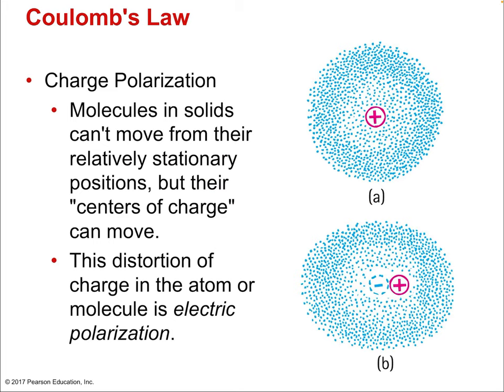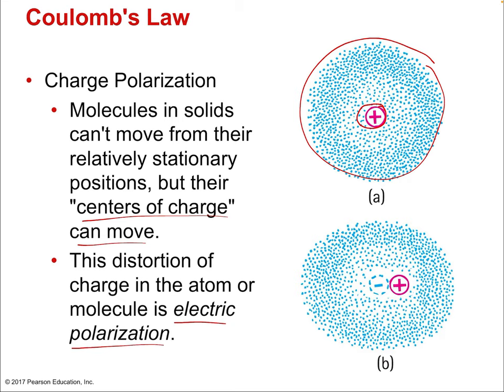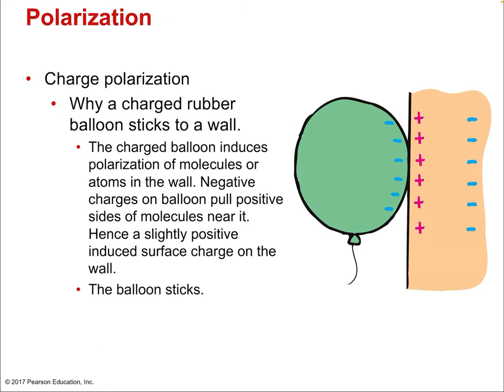Charge polarization is a consequence of Coulomb's Law. Molecules in solids can't move from their positions like free electrons in metals, but their centers of charge can shift — the atom gets elongated or stretched. This distortion is called electrical polarization. A non-polarized atom has a symmetric cloud of electrons around its nucleus, but a polarized atom has that electron cloud pulled in one direction, leaving the nucleus on the other side. The atom becomes a dipole — with two different poles. This can explain phenomena like a charged balloon sticking to a wall.